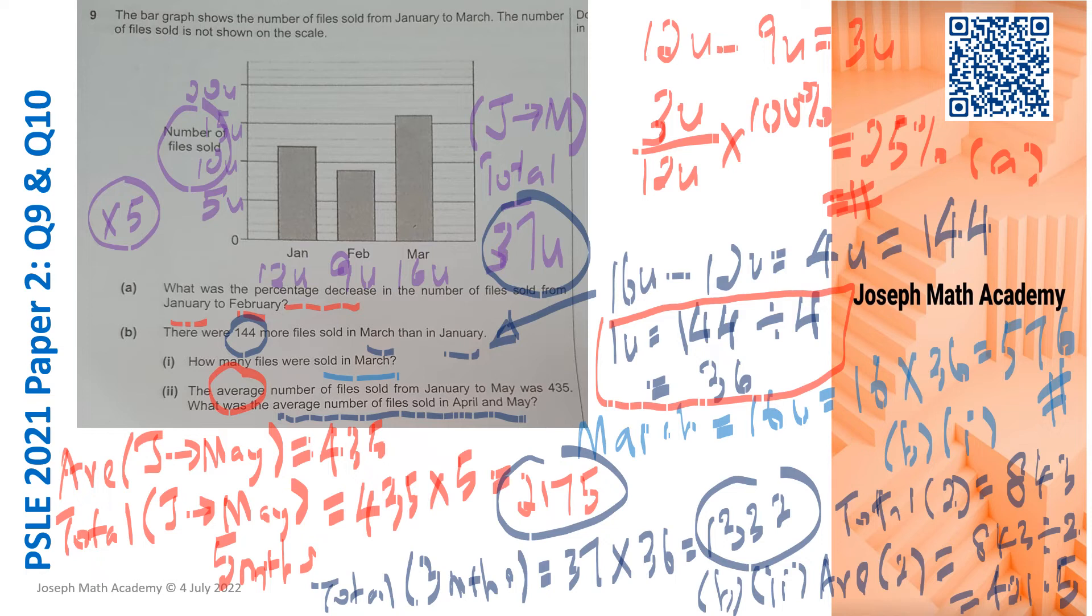This 421.5 files will frighten quite a few of us because normally a file has to be a whole number. But in reality, in the real world, companies whether it's in a car company, in a stationary company, in whatever form, even the population size, when they do average, we do get decimal. So there's nothing frightening about it. Part B2, the answer is 421.5. Number 9 is done.